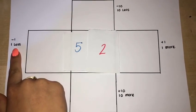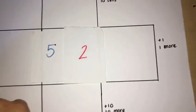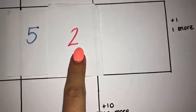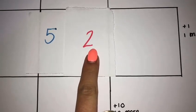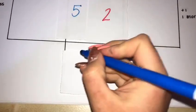We're going to start by finding one less than 52. To find one less, we know that the ones will be changing, so the 50 stays the same.